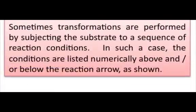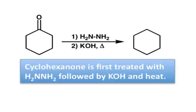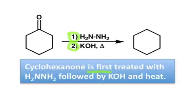Sometimes chemists will combine reactions under just one arrow and denote this with numbers. If there's a sequence of reaction steps, the first is shown with a one, then a two. Not all of these reagents are going in at exactly the same time — reaction one occurs first, then it's followed by reaction two. Whenever you see those numbers, don't add everything in at once; they're occurring sequentially.